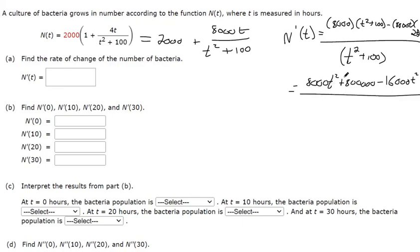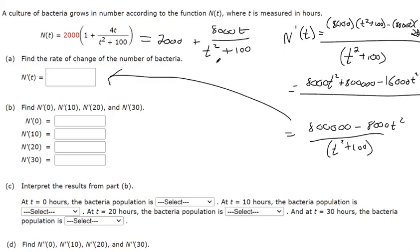And over here, this is 8000t times 2t, so that's 16,000 t squared. So those t squared terms can combine and make it a little simpler. So this is 800,000 subtracted by 8000 t squared over t squared plus 100. So that's what you'd want to have for this version of the question and for the derivative.